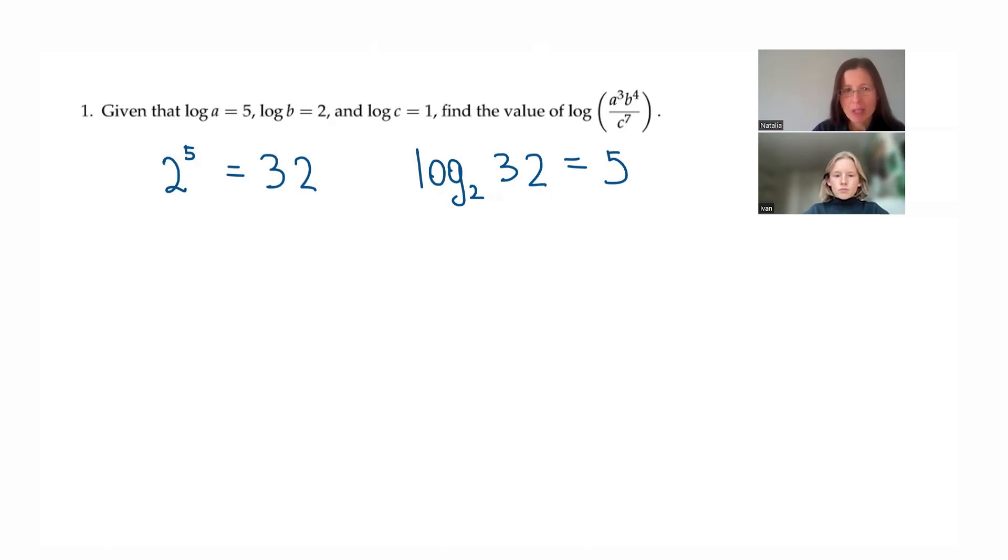So same numbers, 2, 5 and 32 and we are relating them. And logarithm basically asks 2 into what power is equal to 32?